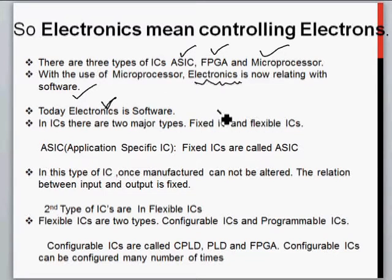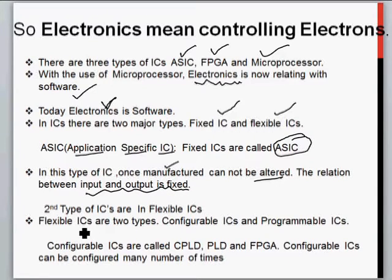In the case of ICs, there are two major families: fixed IC and flexible IC. The fixed ICs are called ASIC, meaning application specific IC. In this type of IC, once manufactured, they cannot be altered or changed. The relation between input and output becomes fixed.